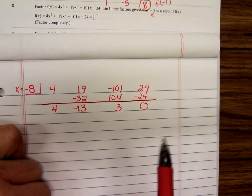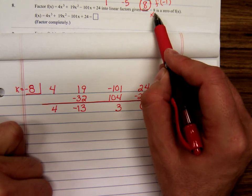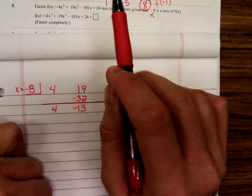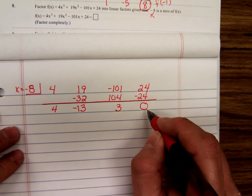That shouldn't be a shock to us because we were told that negative eight is a zero. That means if you plug negative eight in for x, you'll get zero. Also, the remainder, when you divide, will be zero.